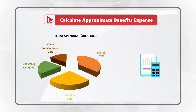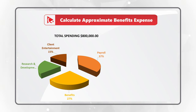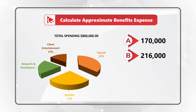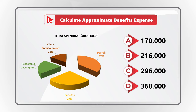In addition to benefits on the chart, you also see payroll, research and development, as well as client entertainment amounts. You are presented with 4 different choices for which you need to do mental calculations. Choice A: 170,000. Choice B: 216,000. Choice C: 296,000. And choice D: 360,000.